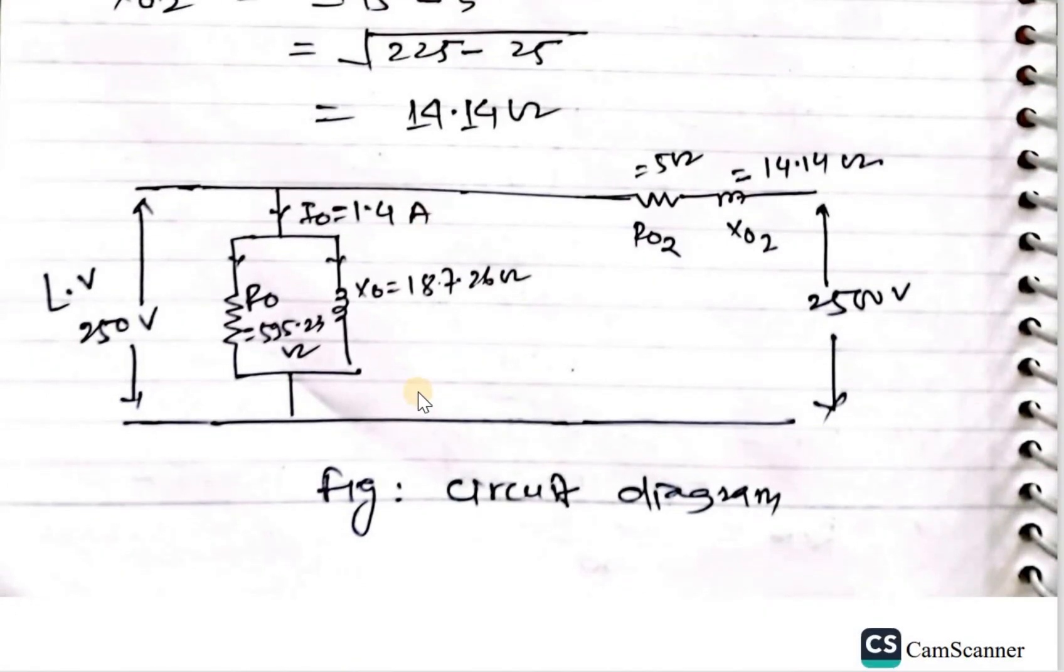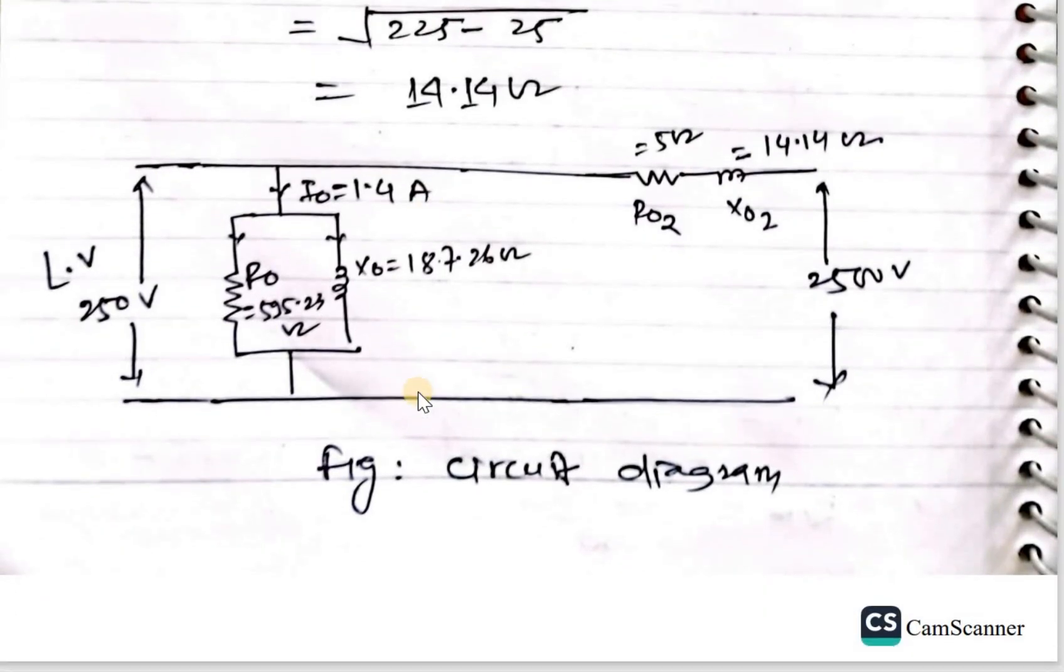This is the circuit diagram of above. This is low voltage side and this is high voltage side. This is R0 and this is X0, R02, X02. This is the value of I0.